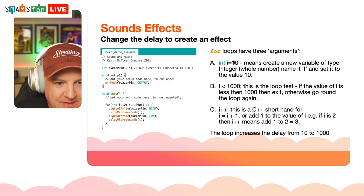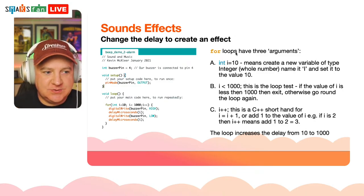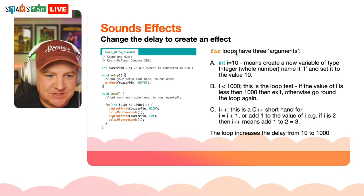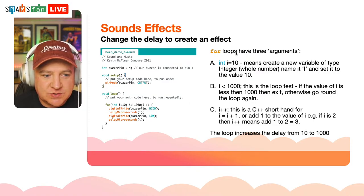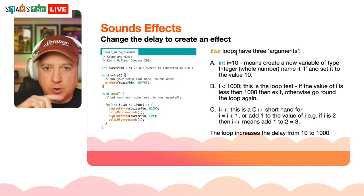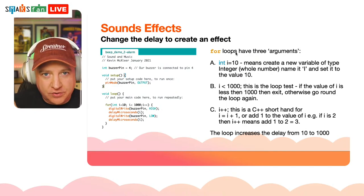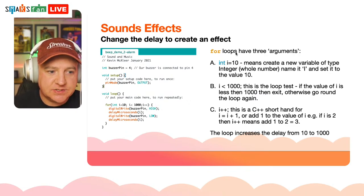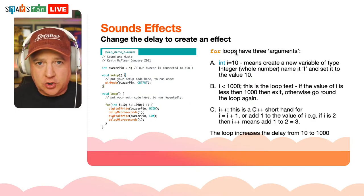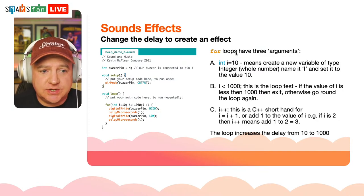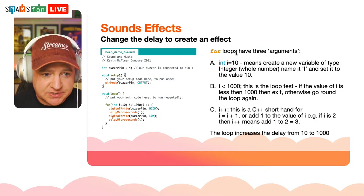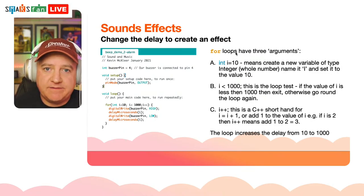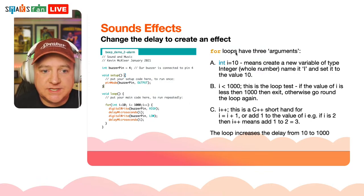For loops have three arguments — three parameters we pass to them. The first is the counter for the loop. The loop goes around for as long as a condition remains true. We create an integer called 'i' — a common placeholder for counters — and give it an initial value of 10. So: int i = 10 means create a whole-number variable starting at value 10.